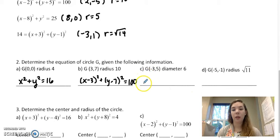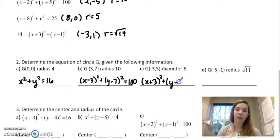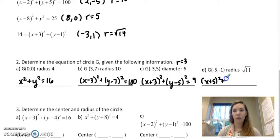For this one I would have x plus 3, because you're using the opposite sign, squared, y minus 5 squared, and this one says diameter, so my radius is 3. 3 squared is 9. Last one I would have x plus 5 squared plus y plus 1 squared equals 11. Square root of 11 squared is just 11.